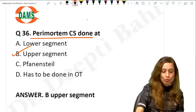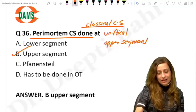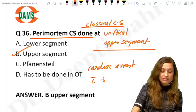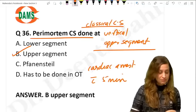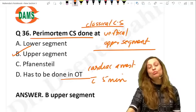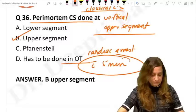Perimortem cesarean section is done at the upper segment. This is one of the modern indications of classical cesarean — a vertical scar in the upper segment — because it gives faster access. When a lady has a cardiac arrest, guidelines say deliver the baby within five minutes. It must be done in the emergency department, not the OT, at the site of resuscitation, with resuscitation continuing throughout delivery.